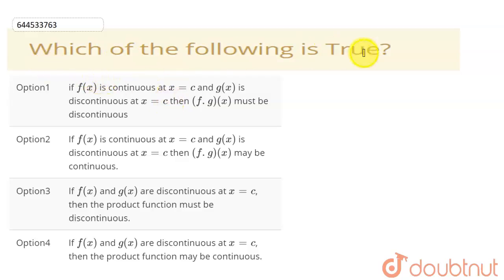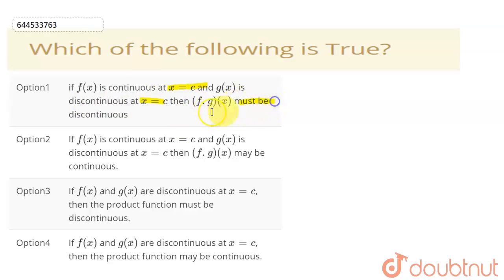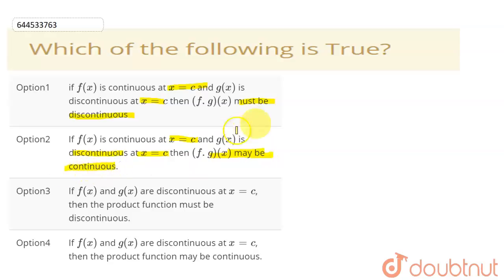In this question we have to tell which of these 4 options is true. In option 1 it says that f(x) is continuous at x = c and g(x) is discontinuous at x = c, and they are saying that f·g(x) must be discontinuous. The second option says if f(x) is continuous at x = c and g(x) is discontinuous at x = c, then f·g(x) may be continuous. So there is a 'must' condition and a 'may be' condition in this question.